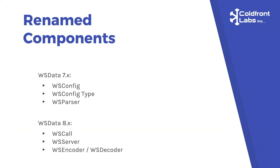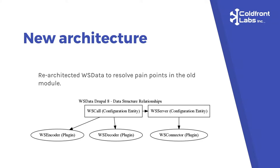When it comes to renaming the components: WS Interface becomes a WS Call — you're actually making a web service call. The Config Types become Server — the server you're making a call to. And WS Parser became a Decoder, but now we have two points: encode on the way out, and decode data on the way back. We re-architected slightly to give you less to configure. On the WS Server you choose your connector, and on the WS Call you choose your encoder/decoder and what service you want to connect to.